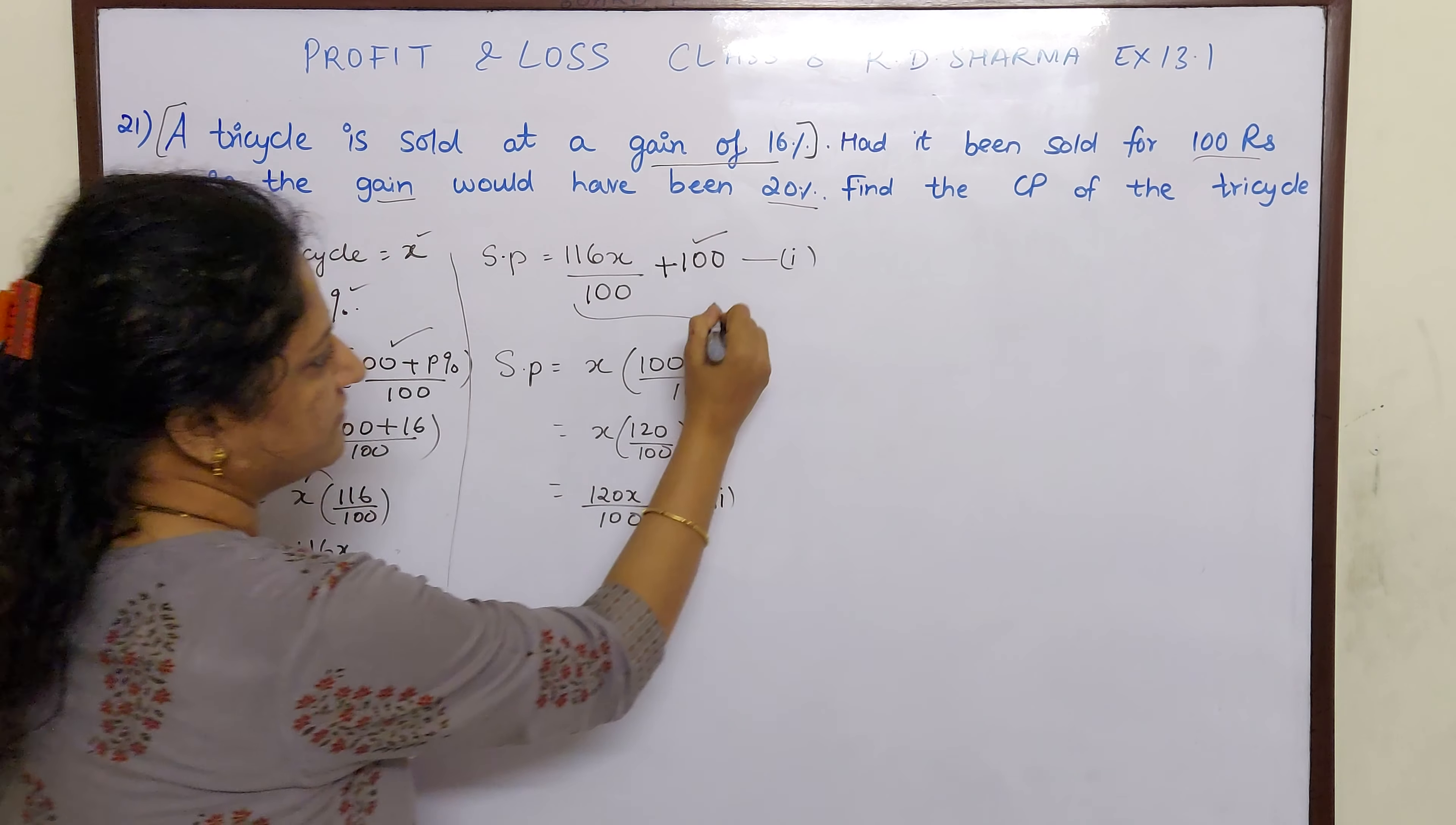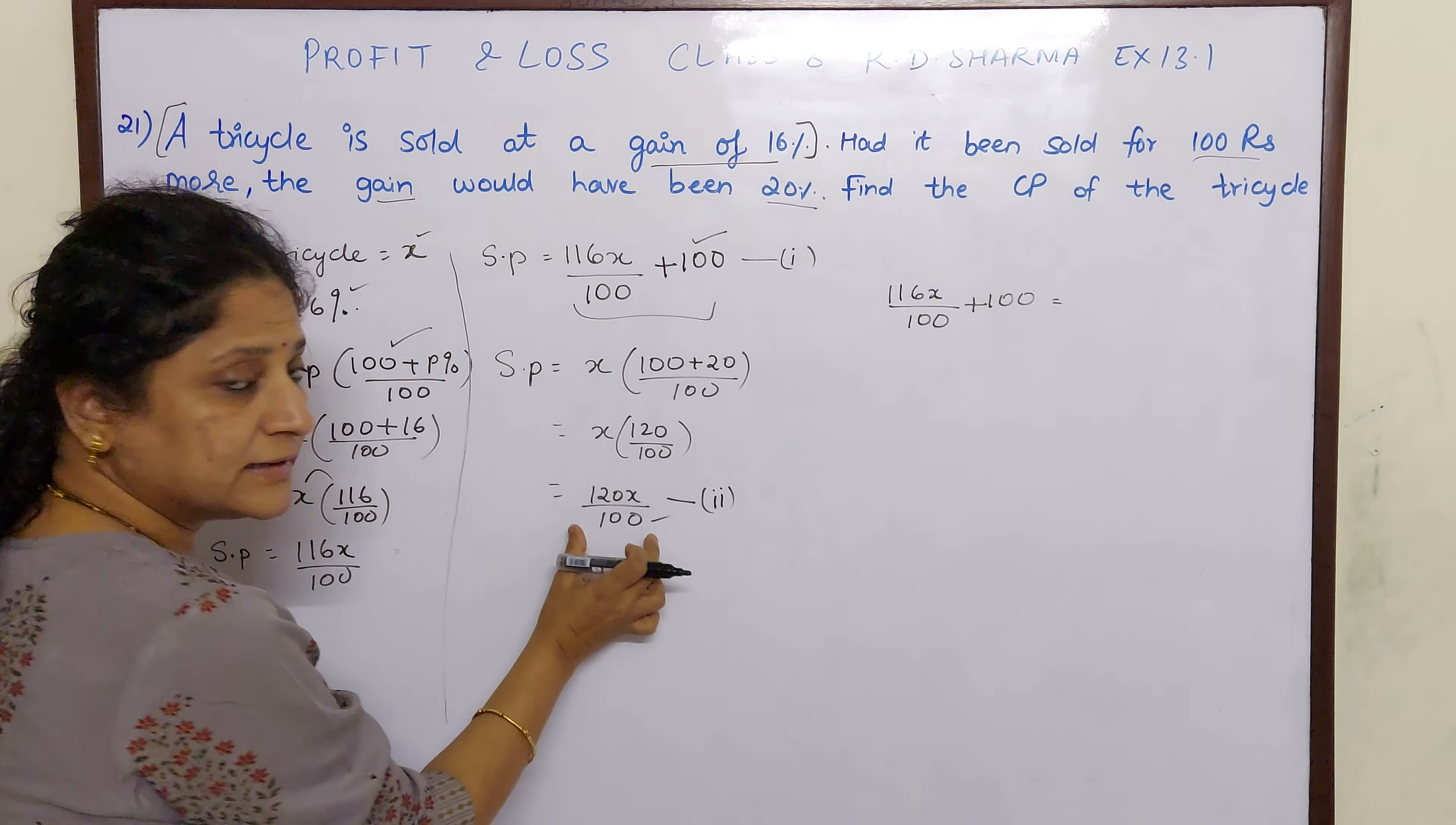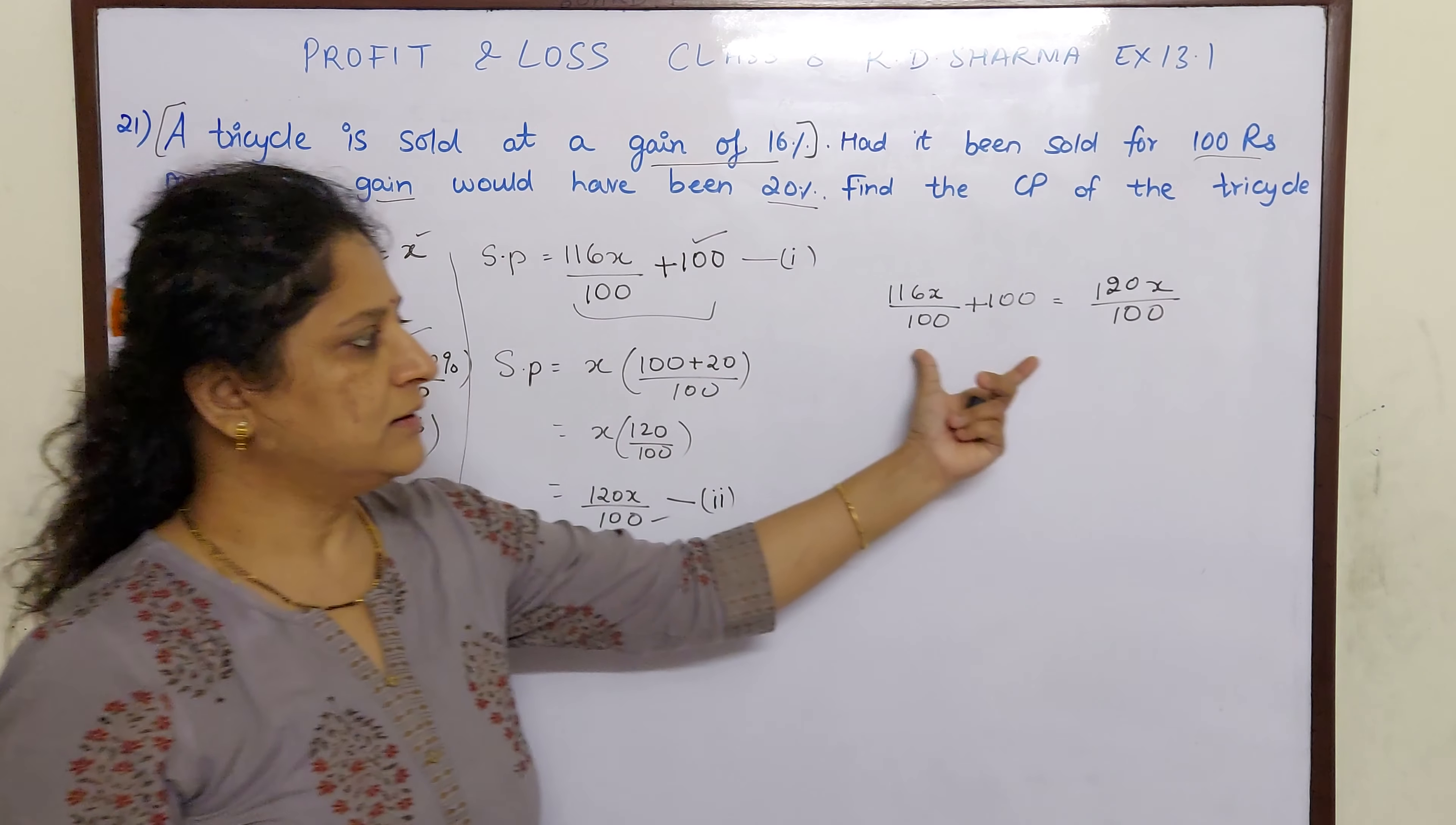That means we have to equate both sides. So this is the first equation: 116X by 100 plus 100. Had the selling price been 100 rupees more, then the gain would have been 20%. So 120X by 100. That's all. So I have equated the sentence.